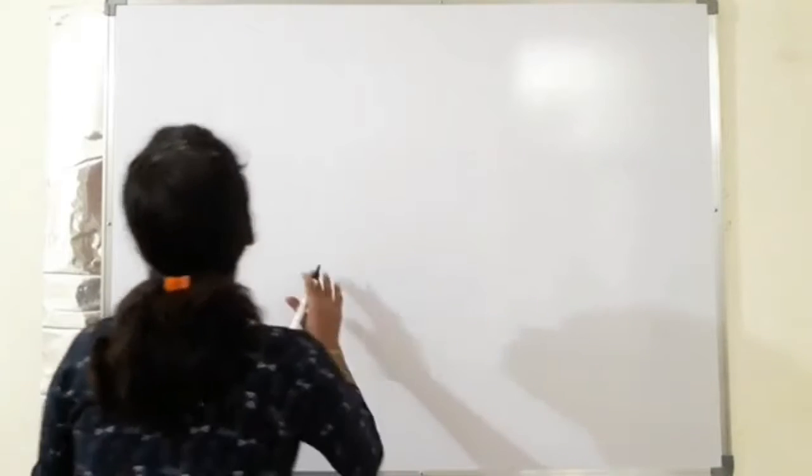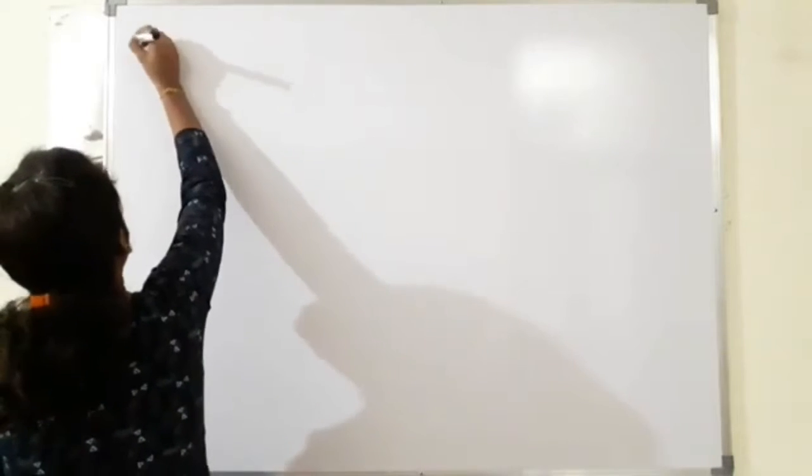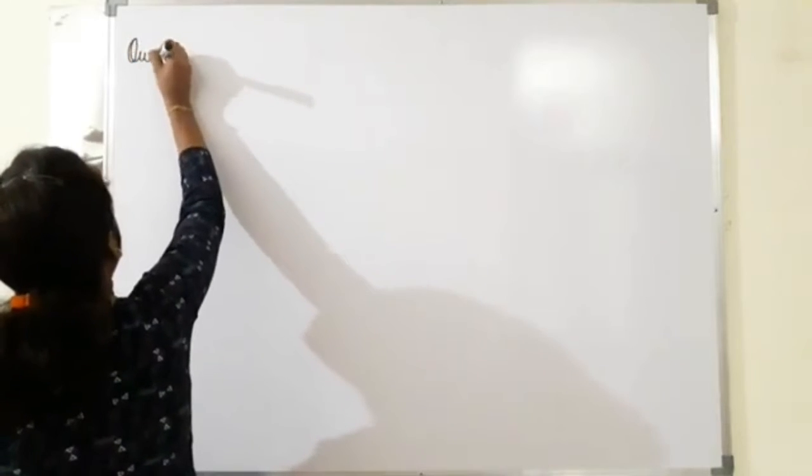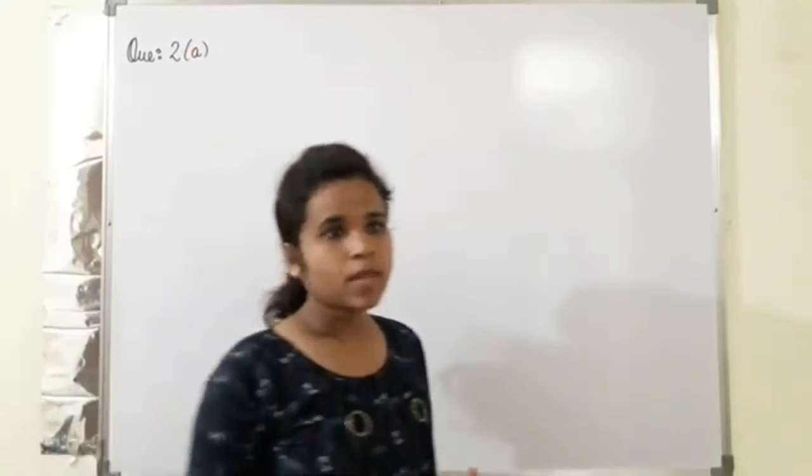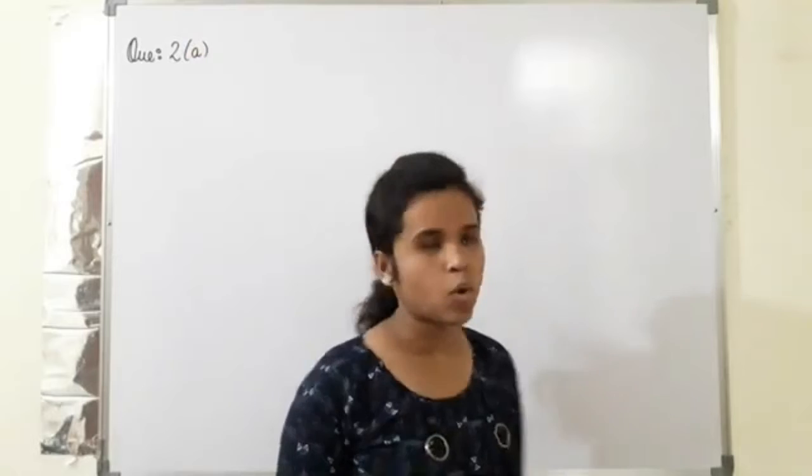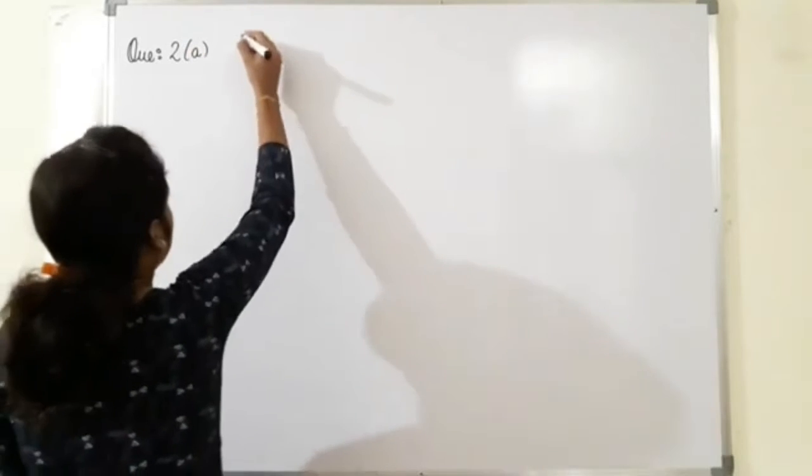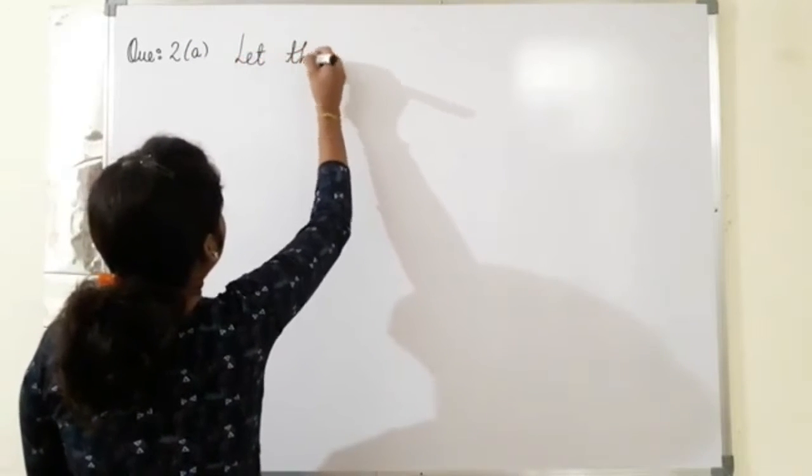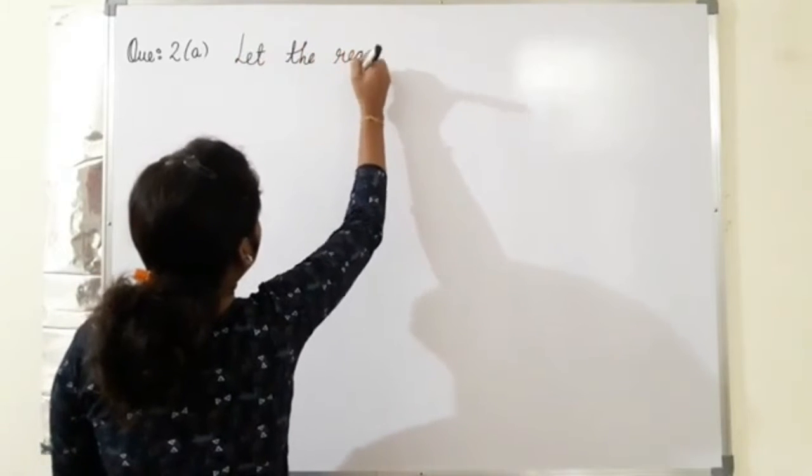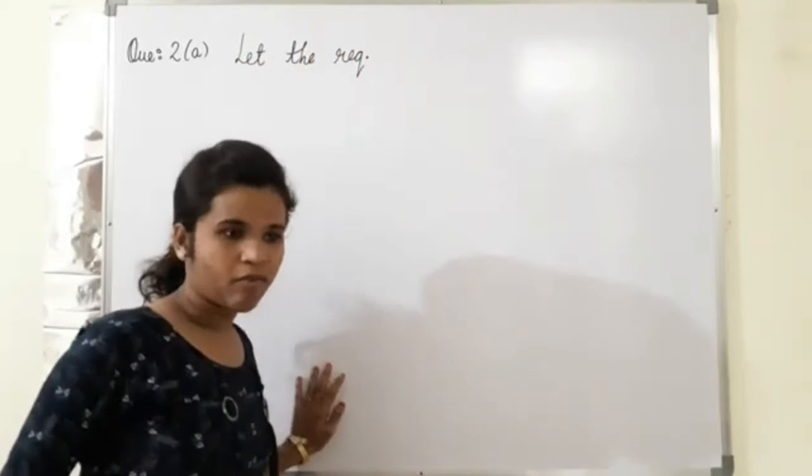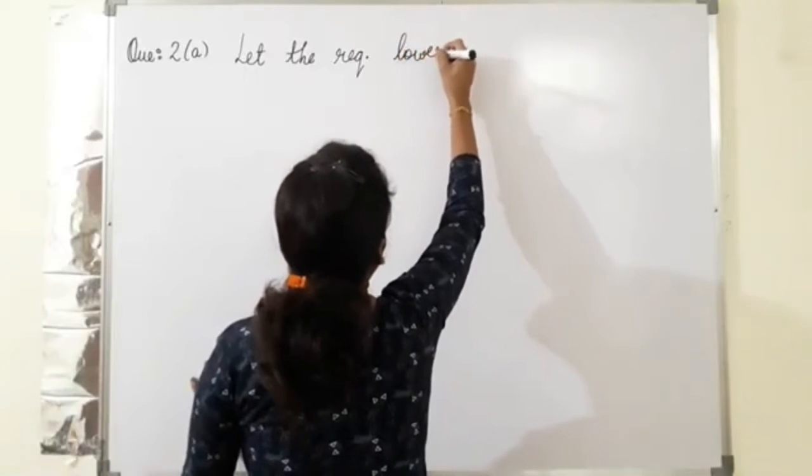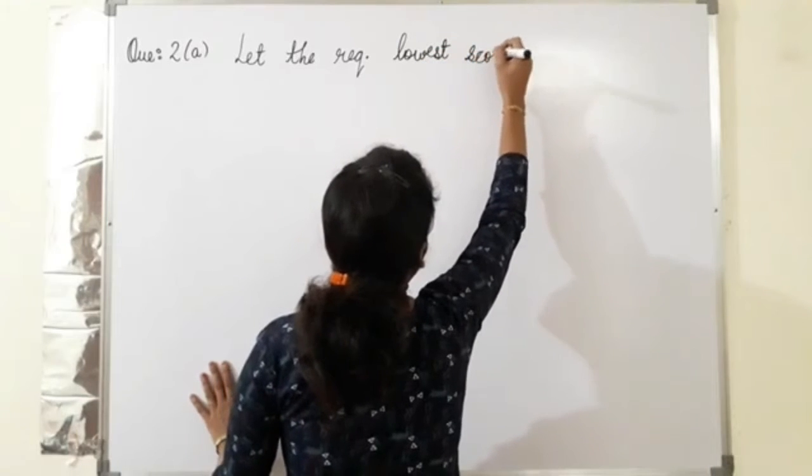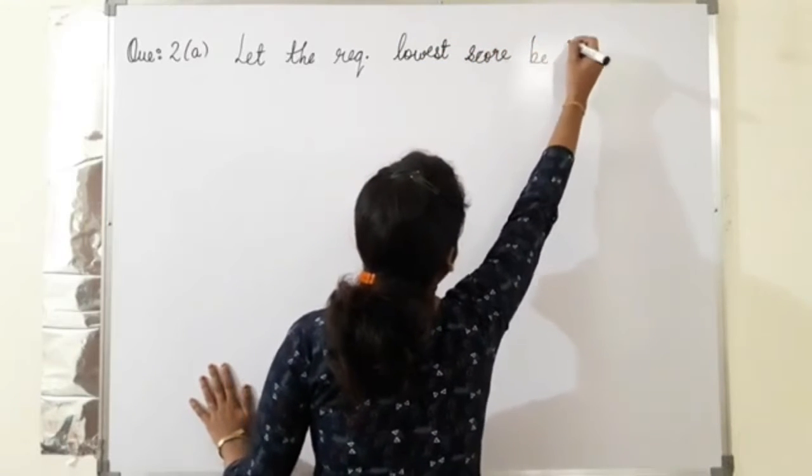Let us solve this type of question. Question second, part A. In question, we need to calculate the lowest score. So let the required lowest score be x.